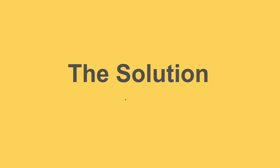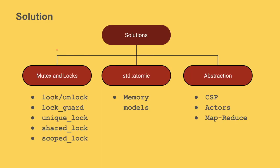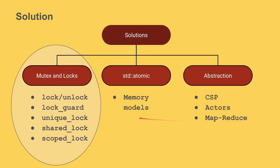I talked about all these problems to get to the solution. I can group solutions into several categories. The part we focus on today is mutexes and locks. There's also std::atomic in C++, which I'd love to cover in a separate video. A third solution is abstraction — techniques like CSP (communicating sequential processes), the actor model, and map reduce.